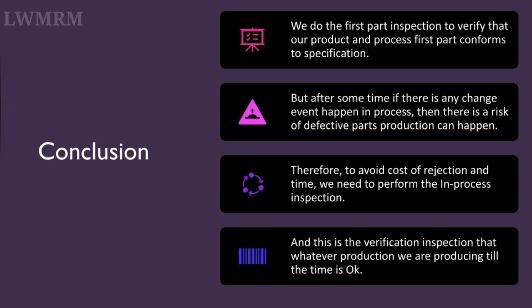Conclusion. We do the first part inspection to verify that our product and process first part conforms to specification. But after some time, if any change event happens in the process, there is a risk of defective parts being produced. Therefore, to avoid the cost of rejection and wasted time, we need to perform in-process inspection. This is the verification inspection that confirms whatever production we are producing up to that point is okay. Thank you friends.